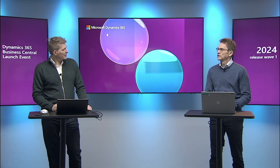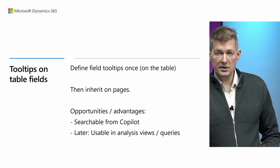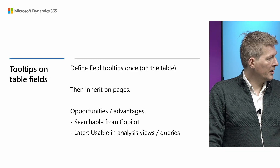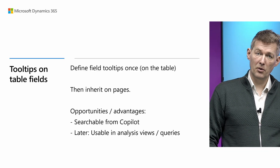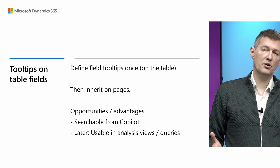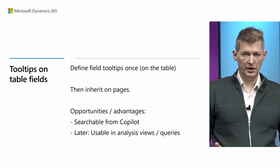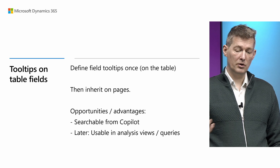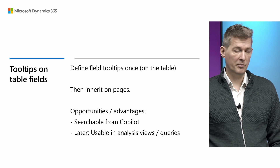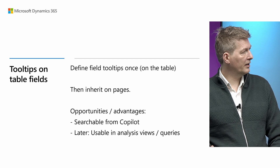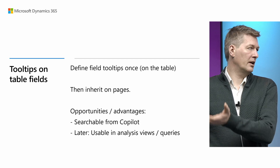Of course, if you don't want the tooltip that was defined on the table, you can still override it on the control, just like you can with captions — think of the same pattern as for captions. This gives some opportunities and advantages, and it's actually why we built it in the first place. We can use it in Copilot features internally, and later we might do the same for queries and maybe even report datasets, so you can define things at the table level and inherit upward.